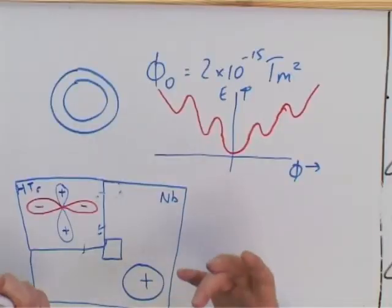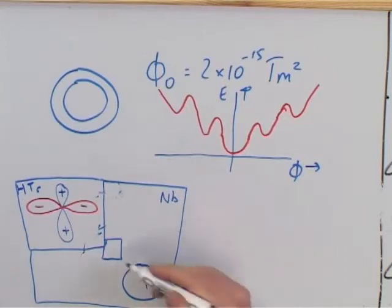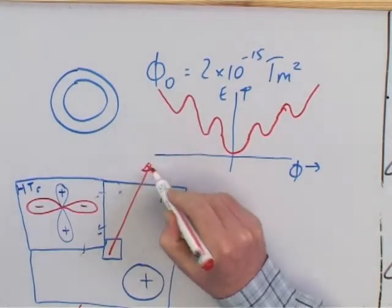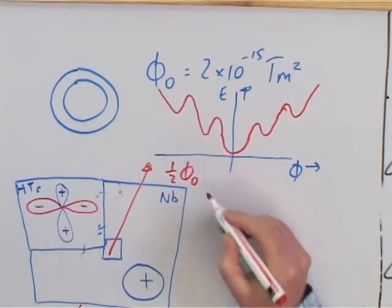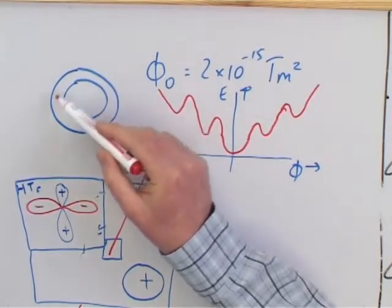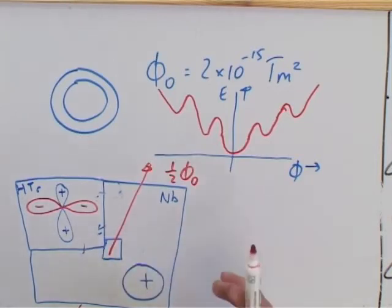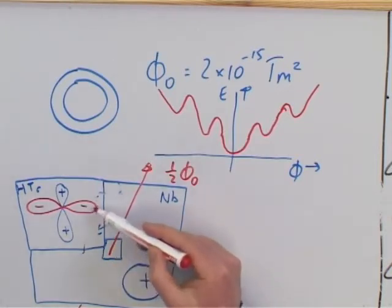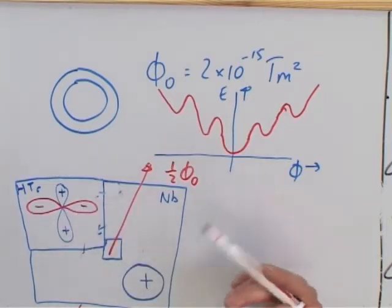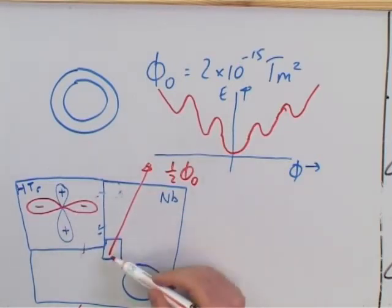The head of the snake has to bite itself in the tail, as you may call it. The system by itself spontaneously generates magnetic flux enclosed in this loop — magnetic flux to the magnitude of a half flux quantum. Because one flux quantum connects to a two-pi phase shift, half a flux quantum connects to a one-pi phase shift, and that's exactly the pi phase shift you need to compensate for the built-in phase shift due to the D-wave order parameter symmetry.